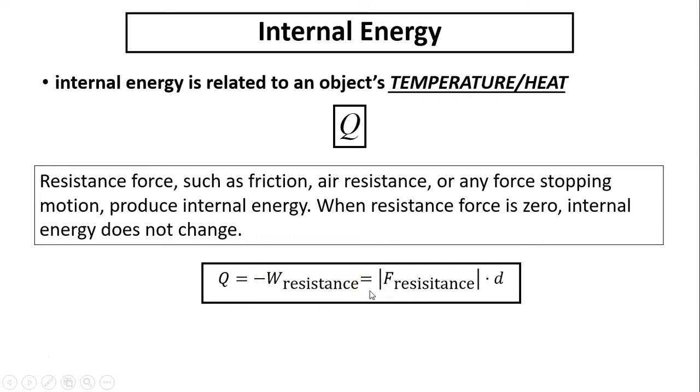So the work done by resistance force is always negative because your friction force and displacement are always 180 degrees between each other. So cosine 180 is negative. So you have a negative negative. That's why you always have a positive Q. Or you can use the magnitude of resistance times the distance to find internal energy.